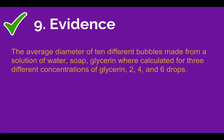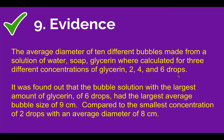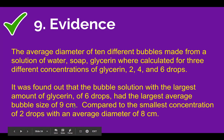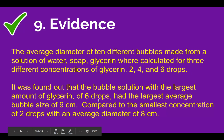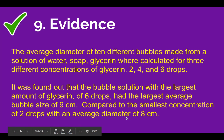Here's a better example. First, a summary of how the data was collected: 'The average diameter of 10 different bubbles made from a solution of water, soap, and glycerin were calculated for three different concentrations of glycerin: two, four, and six drops.' Now here's the evidence — the numbers: 'It was found that the bubble solution with the largest amount of glycerin of six drops had the largest average bubble size of nine centimeters.' Notice each number has a unit, and then we compared it to the smallest concentration of two drops with an average diameter of eight centimeters.